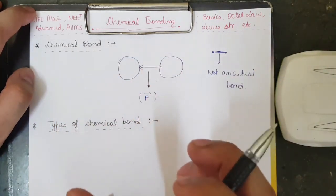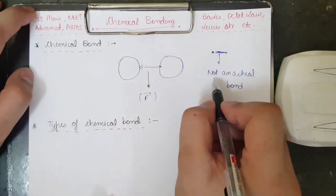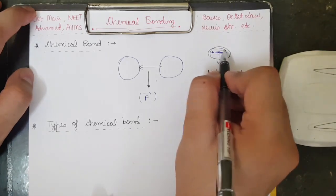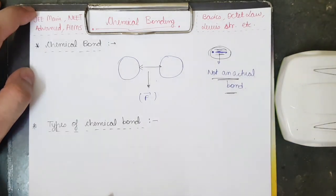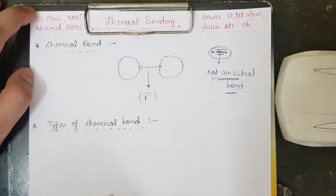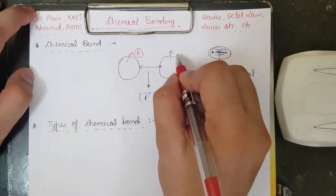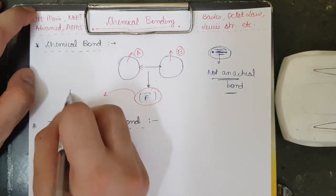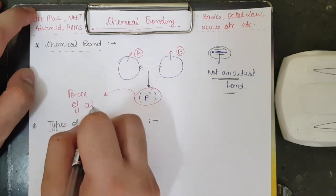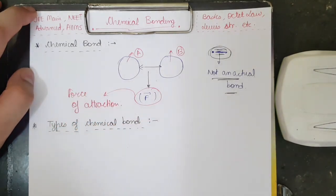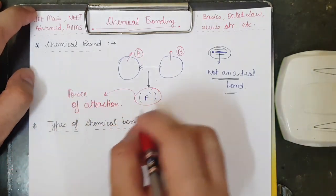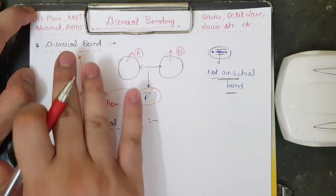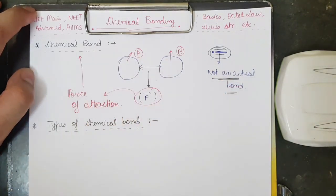First of all, what is a chemical bond? We have to understand that a chemical bond is not an actual bond which physically exists. You won't see straight lines, double bonds, or triple bonds actually existing. When we have two atoms — say atom A and atom B — the force of attraction between them becomes the bond. If there is repulsion, they go apart. So the force of attraction present between two atoms A and B in a molecule is known as a chemical bond. It is not an actual bond; it is just a force of attraction.